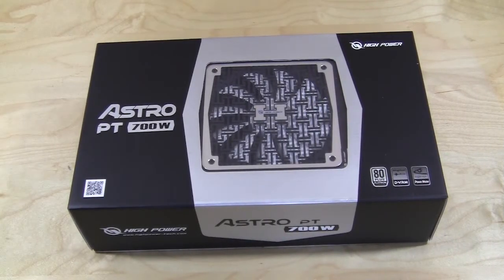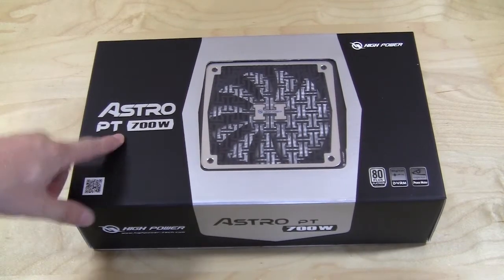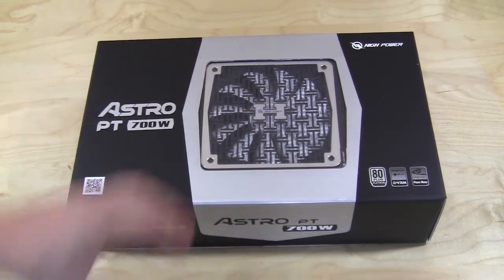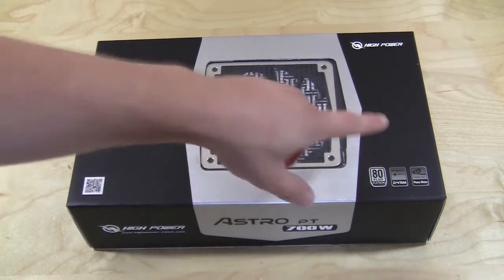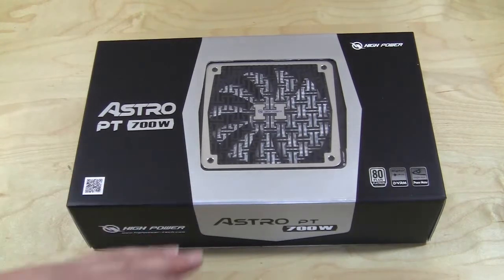Alright, so if we take a look at the box, it does let us know it is the Astro PT 700 watt. It's open here on the front so you can actually take a look at the power supply before you're going to buy it. It lets us know that it is 80 Plus Platinum certified and that is 89% efficient at 100% load.